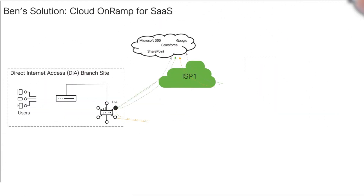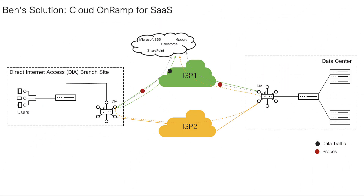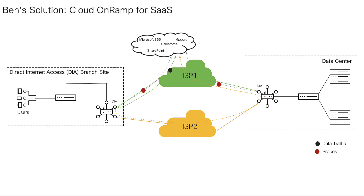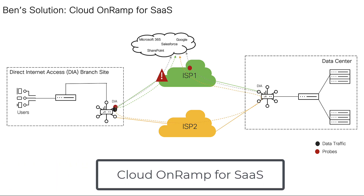Let's see how Cloud OnRamp for SaaS helped Ben in completing this task. With Cisco SD-WAN, you can easily configure access to SaaS applications through a centralized GUI. Access can be either direct to the internet from a remote site or through gateway locations such as regional data centers or carrier-neutral facilities. In addition, the Cisco SD-WAN solution continuously measures and monitors the performance of each application along with each path to that application, and it chooses the best-performing path for the most optimal user experience. If changes or impairments occur in the network, the solution can adjust dynamically and intelligently move SaaS traffic to the updated optimal path. This feature is called Cisco SD-WAN Cloud OnRamp for SaaS.